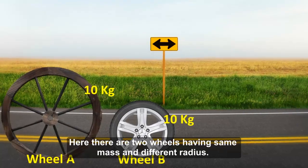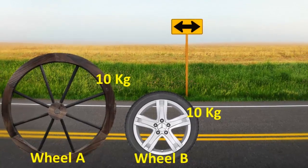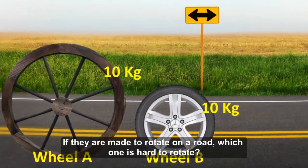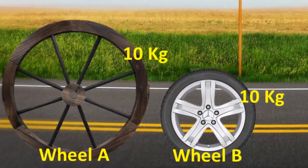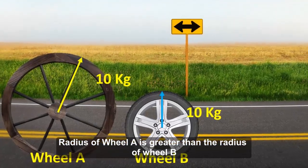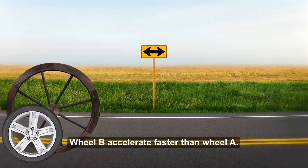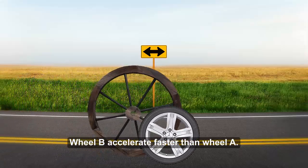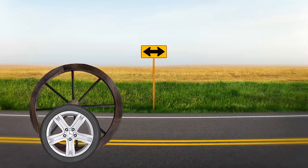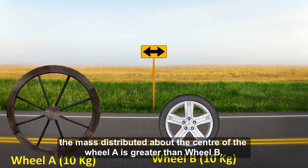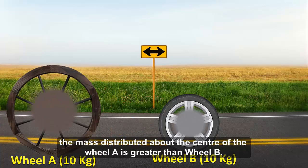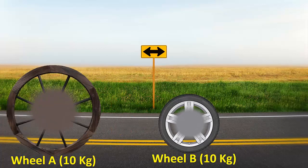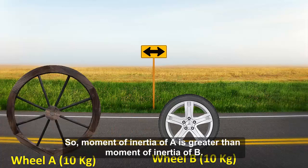Here there are two wheels with same mass and different radius. If they are made to rotate on the road, which one is hard to rotate? The radius of wheel A is greater than the radius of wheel B. Wheel B accelerates faster than wheel A. Since wheel A has more radius, the mass distributed about the center of wheel A is greater than that of wheel B.